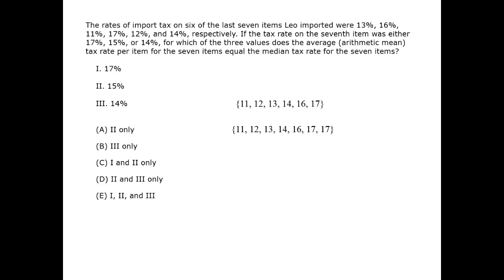Let's turn to case two. The final number is 15, giving us this set. We can see pretty quickly here that the median equals the mean, because 14 is the mean and the other numbers balance out around 14 in pairs: 11 with 17, 12 with 16, and so on. So case 2 is in the correct answer.